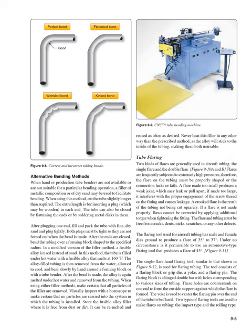Tube flaring: two kinds of flares are generally used in aircraft tubing, the single flare and the double flare (Figure 9-10A and B). Flares are frequently subjected to extremely high pressures. Therefore, the flare on the tubing must be properly shaped or the connection leaks or fails. A flare made too small produces a weak joint which may leak or pull apart. If made too large, it interferes with the proper engagement of the screw thread on the fitting and causes leakage. A crooked flare is the result of the tubing not being cut squarely. The flare and tubing must be free from cracks, dents, nicks, scratches, or any other defects. The flaring tool used for aircraft tubing has male and female dies ground to produce a flare of 35 to 37 degrees. Under no circumstance is it permissible to use an automotive type flaring tool that produces a flare of 45 degrees.